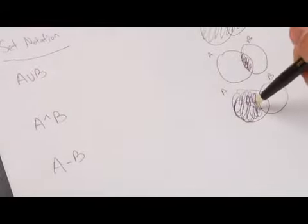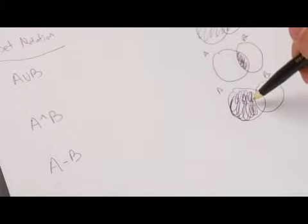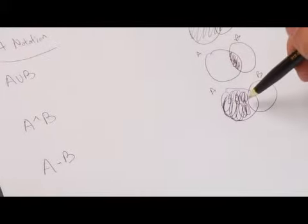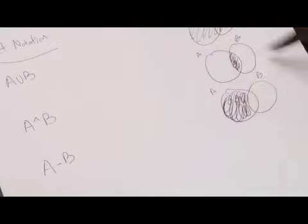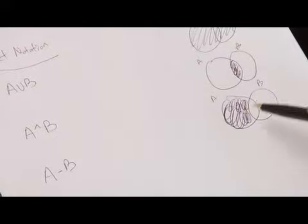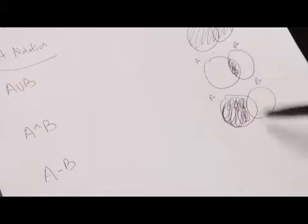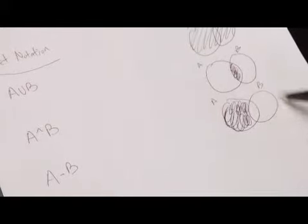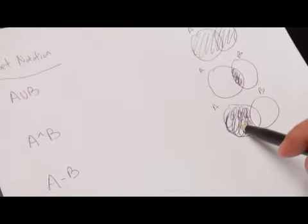in this particular diagram because this is everything in A except for anything in its overlap with B. So only specific to A and just A alone, and nothing that overlaps or is in common with B is going to be shaded.